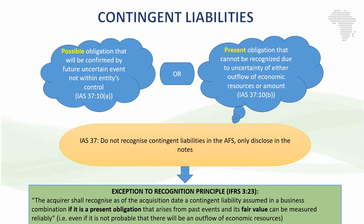Now let's talk about contingent liabilities of the acquiree at the date of acquisition. There are two types of contingent liabilities in terms of IAS 37. The first one is where we only have a possible obligation whose existence will be confirmed by the occurrence or non-occurrence of a future uncertain event not wholly within the entity's control. The second type is where we have a present obligation due to a past event, however we are not able to recognize that contingent liability because either it is not probable that there will be an outflow of economic resources, or we cannot measure the amount reliably. In terms of IAS 37, we do not recognize contingent liabilities in the financial statements — we only disclose them in the notes.